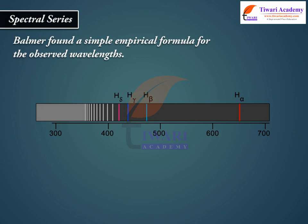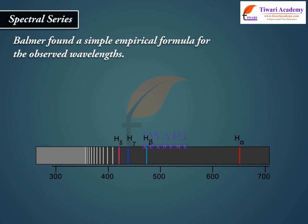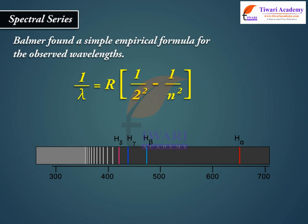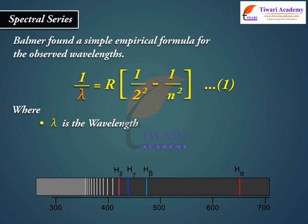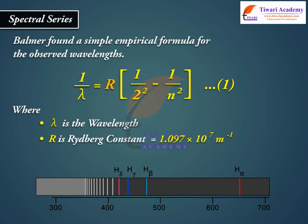Balmer found a simple empirical formula for the observed wavelengths: 1/λ = R(1/2² − 1/n²), where λ is the wavelength, R is the Rydberg constant equal to 1.097 × 10⁷ m⁻¹, and n may have integral values 3, 4, 5, etc.